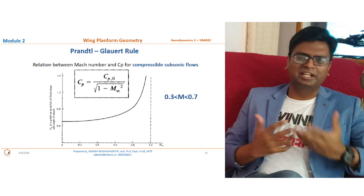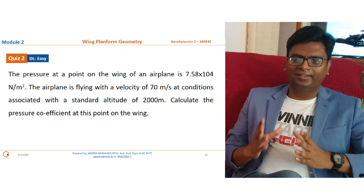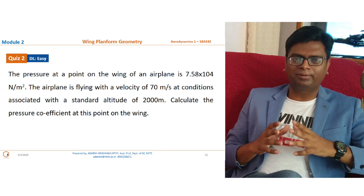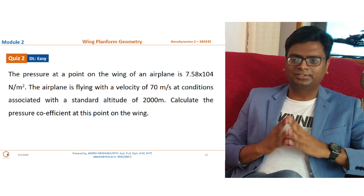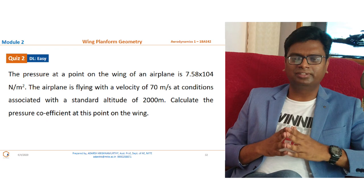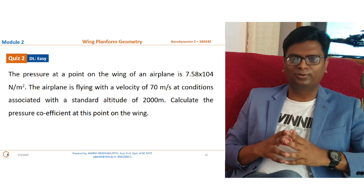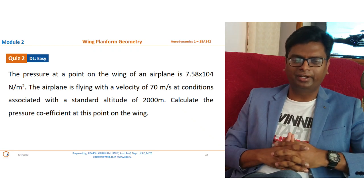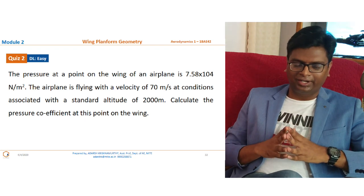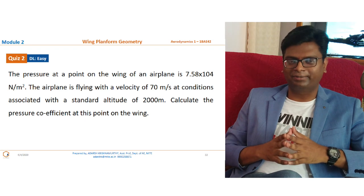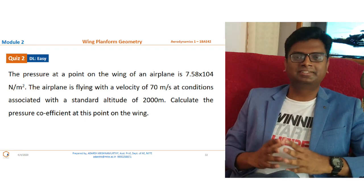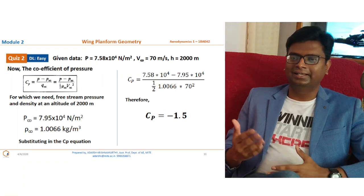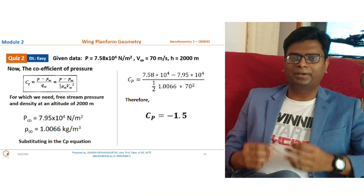To understand the concept better, here is a problem: the pressure at a point on the wing of an airplane is 7.58 × 10⁴ N/m². The airplane is flying at a velocity of 70 m/s at conditions associated with a standard altitude of 2000 meters. Calculate the pressure coefficient at that point. You can pause the video now and try to solve this problem using concepts we have studied, then come back.